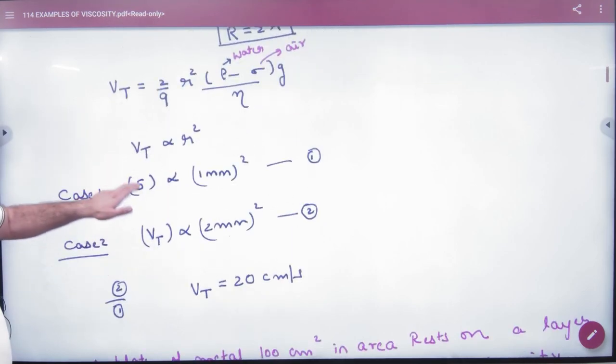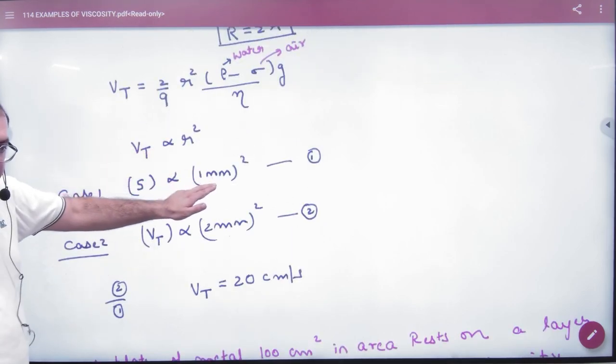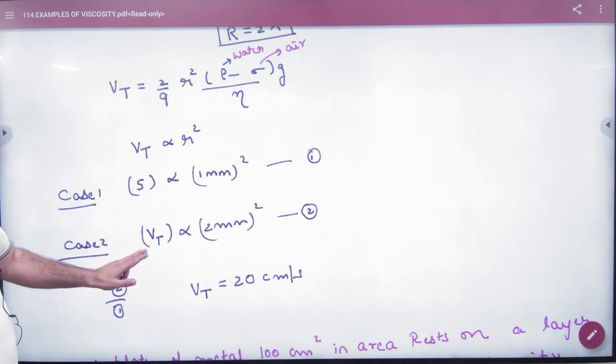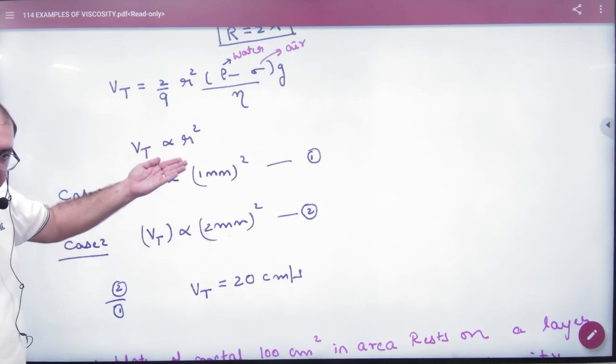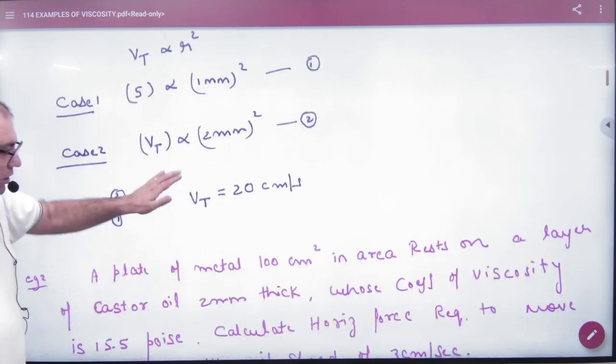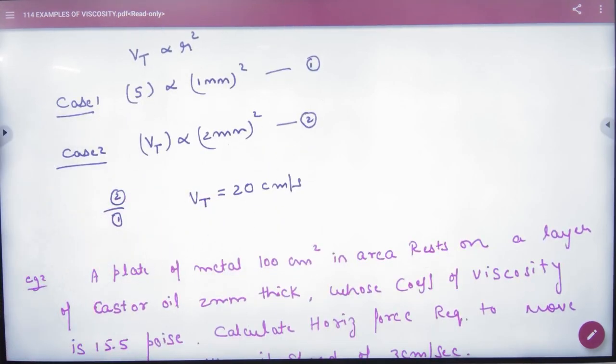The small drop terminal is 5 and radius is 1. For the big drop, radius is 2. So divide them: 4 by 1 will come. The terminal velocity will be 20 cm per second.